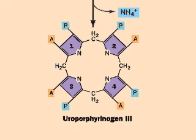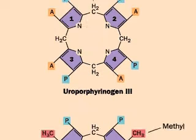The linear molecule cyclizes. Ring number one has to flip to do this, giving off another ammonium ion, to form uroporphyrinogen III.